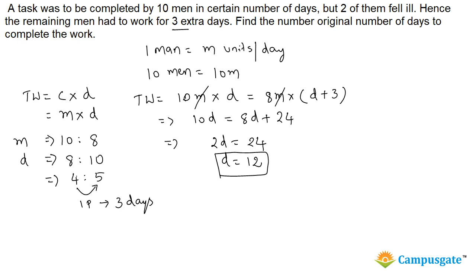This is the originally planned number of days. So how much 4 parts will be? 4 into 3 is 12 days. So this is a better way of solving. Here also you will get the same answer, 12 days, but this is much more efficient.